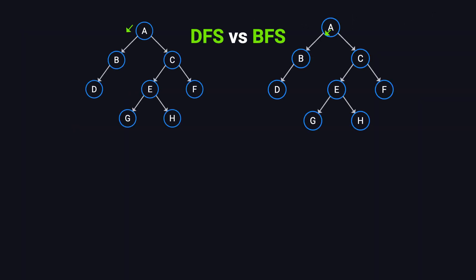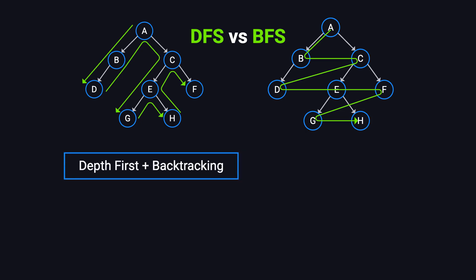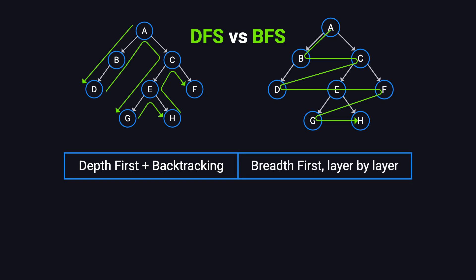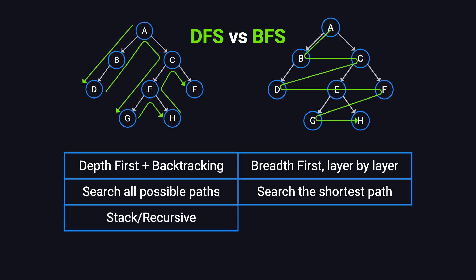Now that we've learned both depth-first search, DFS, and breadth-first search, BFS, let's compare them. DFS dives as deep as possible into a structure before backtracking, while BFS explores level by level, expanding outward. DFS is useful for exploring all possible paths, making it ideal for backtracking algorithms. In contrast, BFS is the go-to choice for finding the shortest path in an unweighted graph. DFS relies on a stack, often implemented with recursion, whereas BFS uses a queue and is typically implemented iteratively. Ultimately, the choice between DFS and BFS depends on the specific problem you're solving.